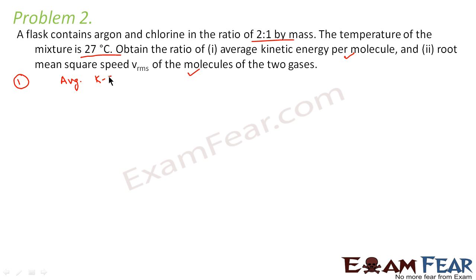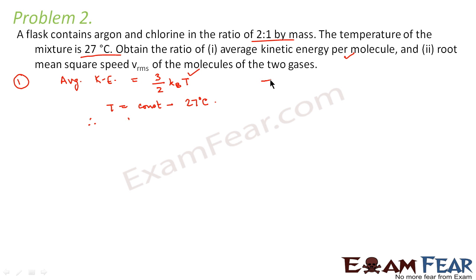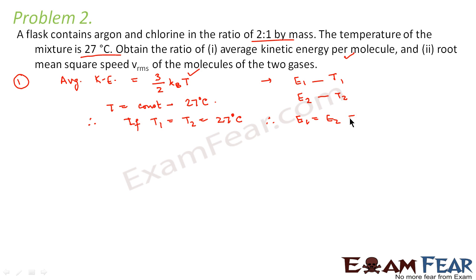From kinetic theory, average kinetic energy equals (3/2) k_B T for all gases. Since the temperature of the mixture is constant at 27 degrees Celsius, the average kinetic energy for both gases will be the same. Therefore, if E1 is the kinetic energy of argon and E2 that of chlorine, since T1 equals T2, we get E1 equals E2. So the ratio of kinetic energies is 1:1.